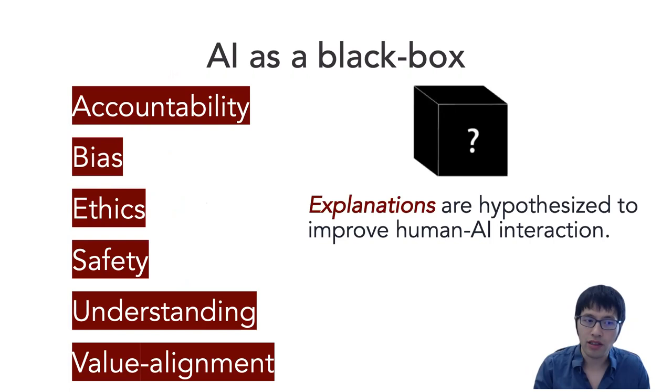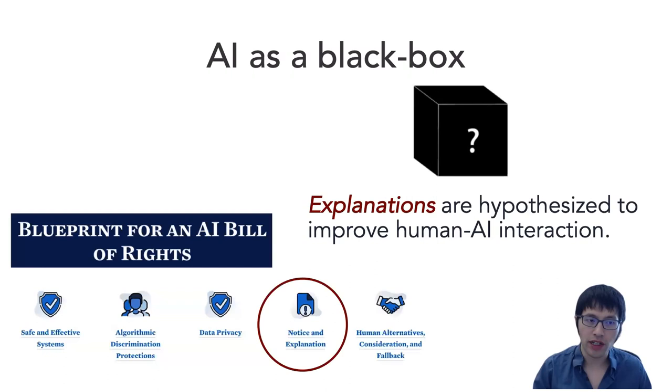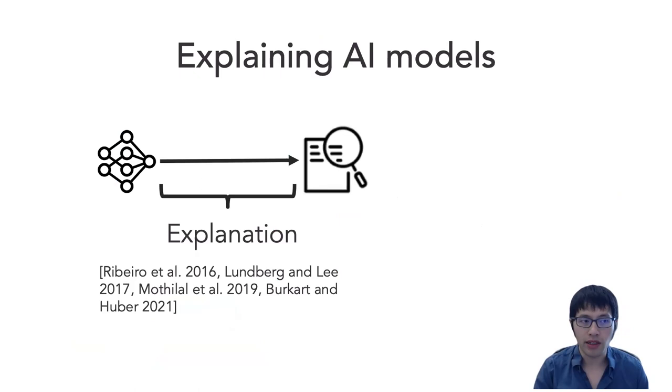Explanations are hypothesized to improve human interaction. They can serve as a way to help bridge human and AI. Indeed, the role of explanations is well-recognized in current thinking around the regulation of AI. In the US, a recent AI Bill of Rights has an important component called notice and explanations.